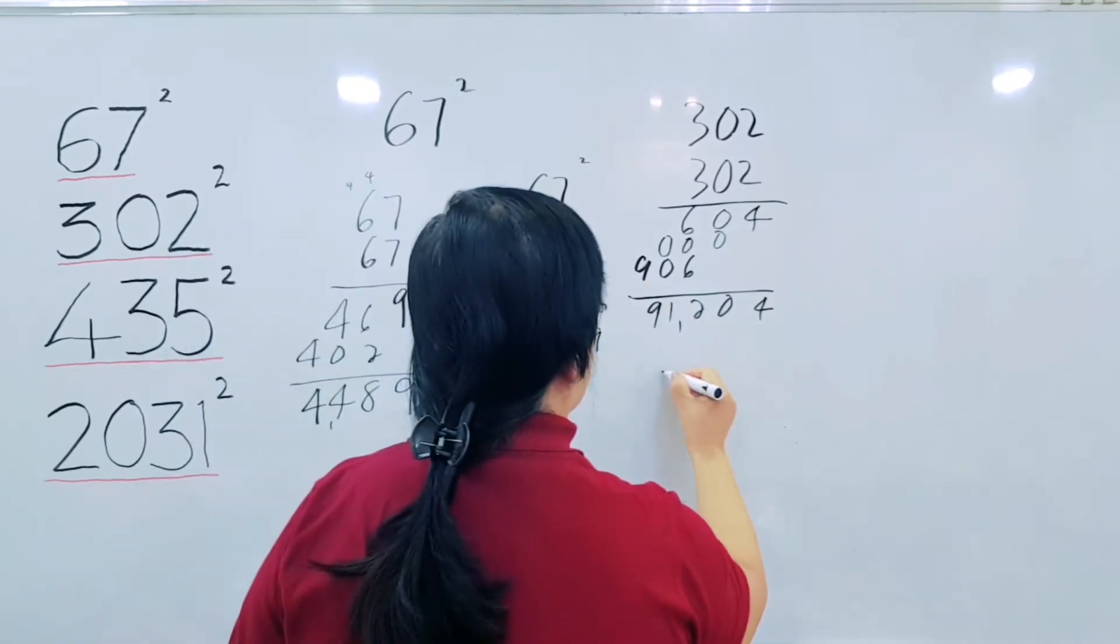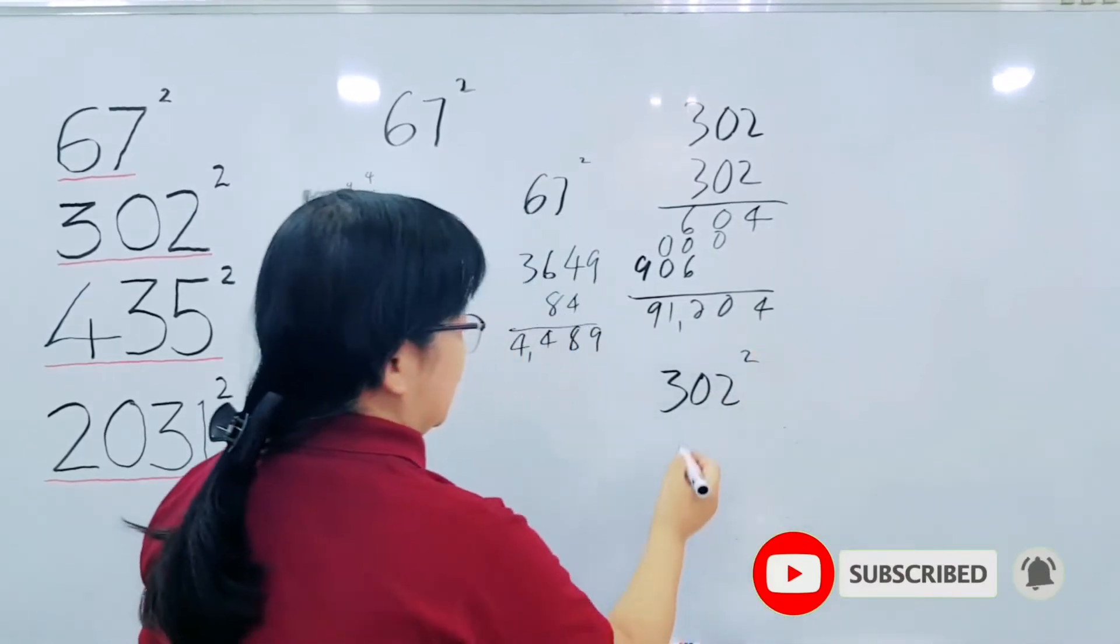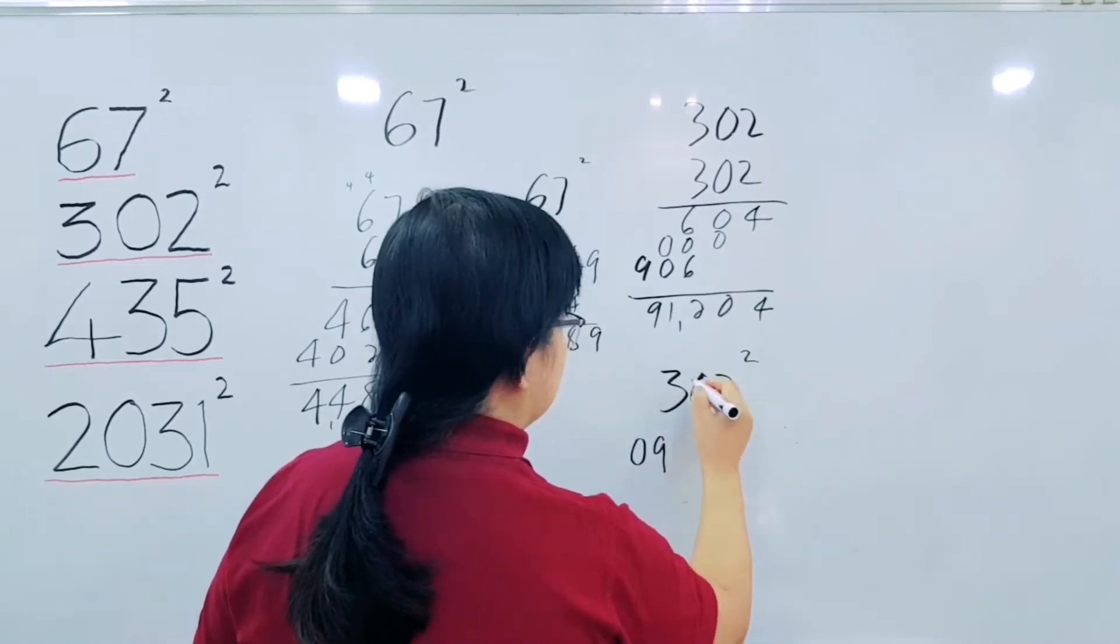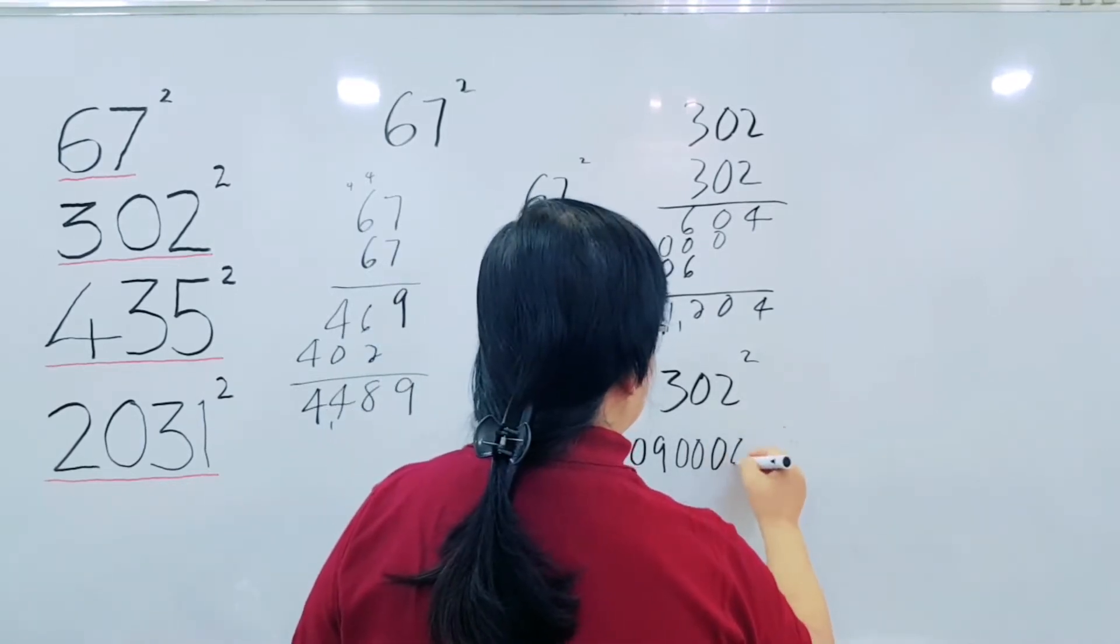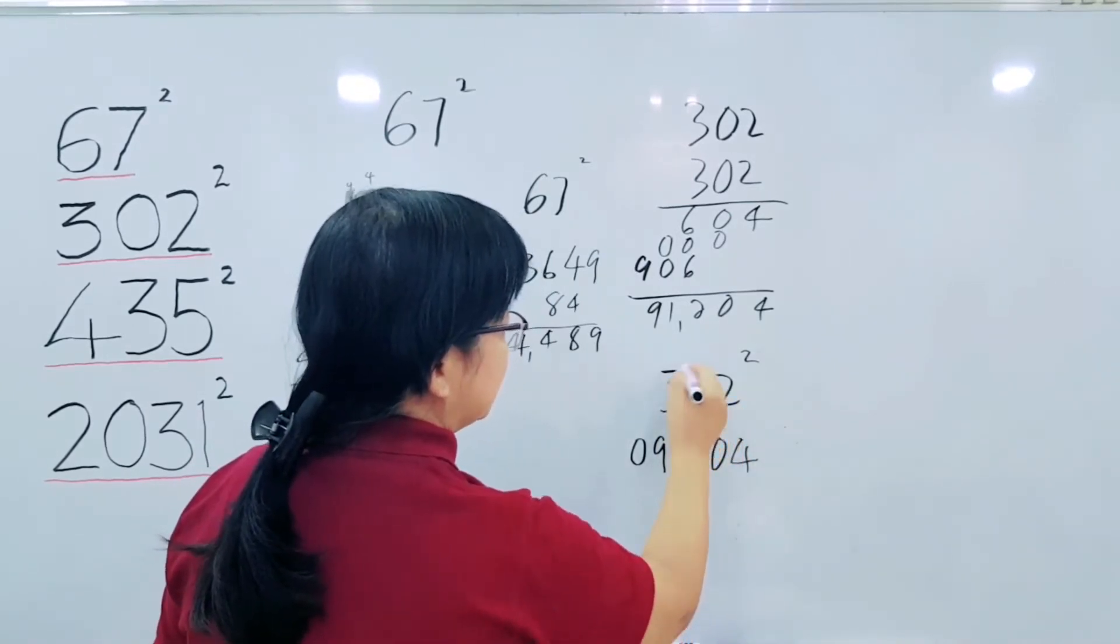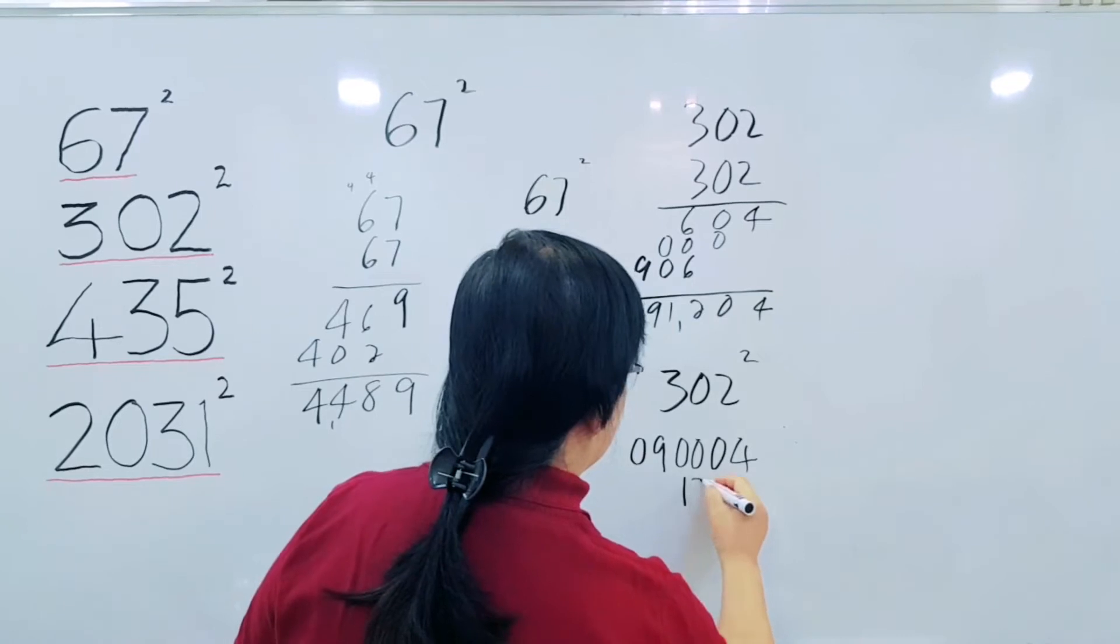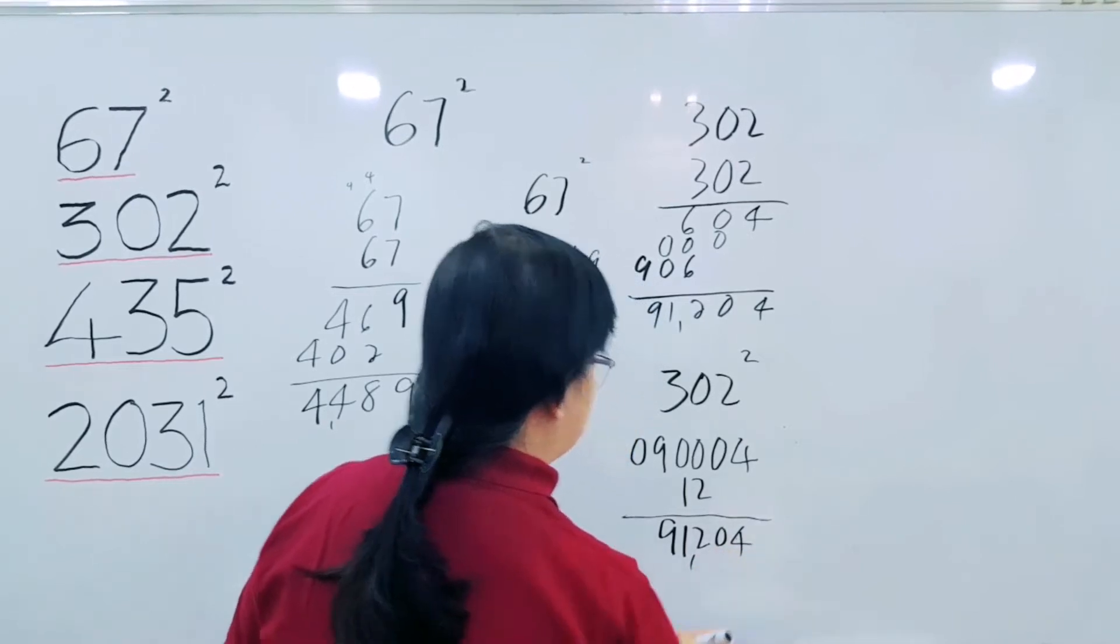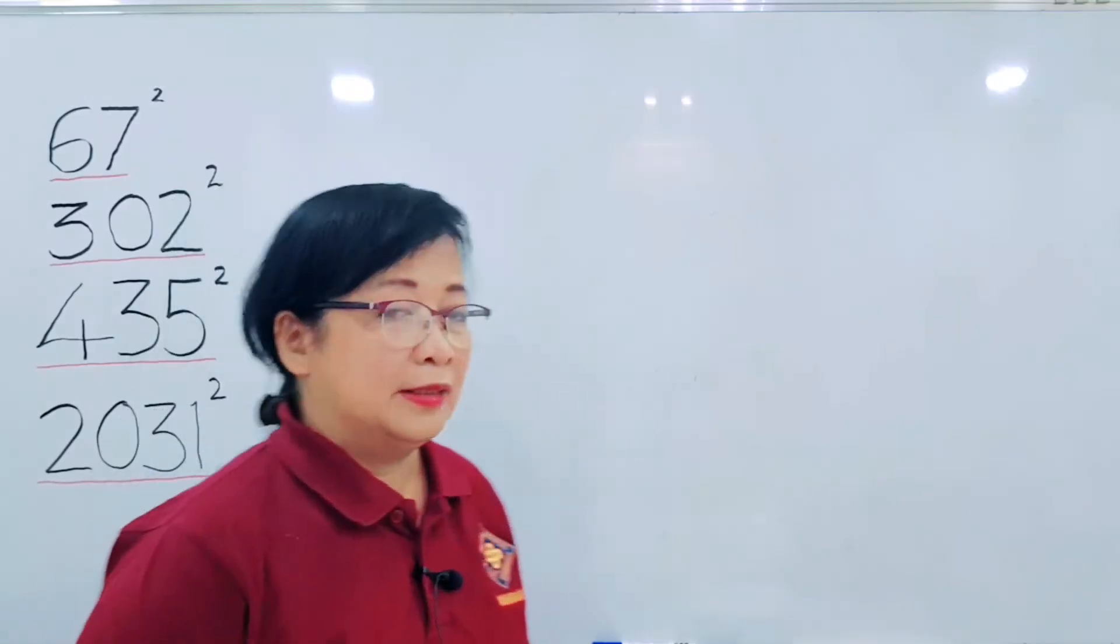Now, if we will use the metric: 302 squared. 3 squared is equal to 9, so 0, 9. 0 squared is equal to 0, so 0, 0. 2 squared is equal to 4, so 0, 4. Now, we have 3 times 0 is 0, so 0 times 2 is also 0. Then, the last is 3 times 2 is equal to 6. 6 times 2 is equal to 12. So, we have now the answer 9, 1, 2, 0, 4, which is 91,204. Ang bilis, di ba?